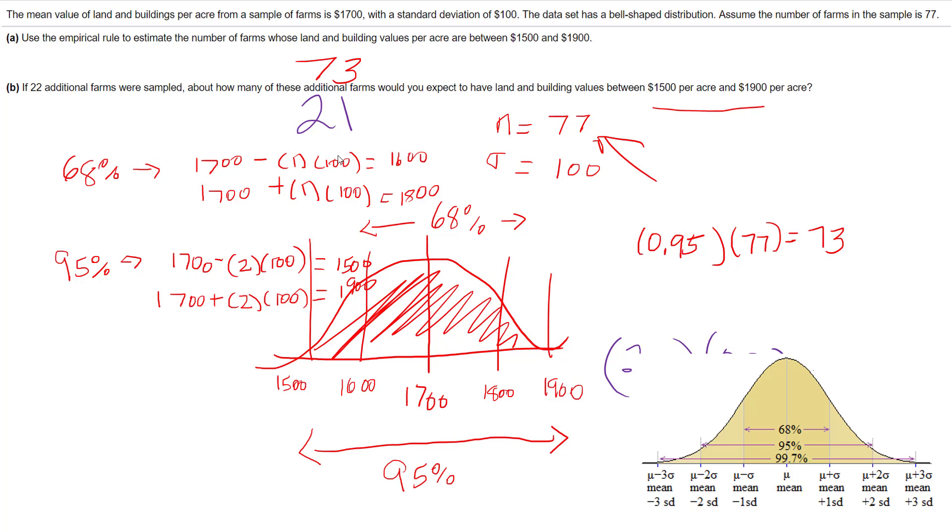This empirical rule is very, very important. If we continued with the empirical rule, we could actually do three standard deviations. Three standard deviations is 99.7% of our data, so that would be 1700 minus 3 times 100 and 1700 plus 3 times 100. That would give us $1,400 and $2,000. Learn that empirical rule—very, very important.